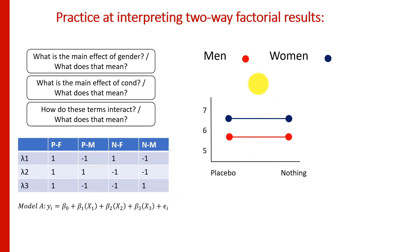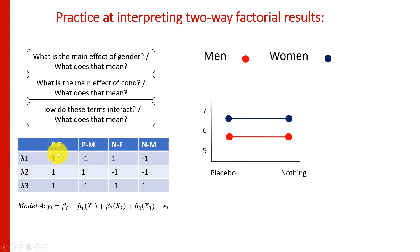Let's do some practice interpreting main effects and interactions with slightly different hypothetical data. We'd represent this with contrast codes: lambda 1 codes females as +1 and males as -1; lambda 2 codes the placebo group as +1 and the nothing group as -1; and the interaction is the cross product of those two codes — so female/placebo is +1, male/placebo is -1, female/nothing is -1, and male/nothing is +1. These go into a model A that estimates the mean for each gender in each condition. Looking at the plot, do you think there's a main effect of gender, a main effect of condition, and is there a statistically significant interaction?